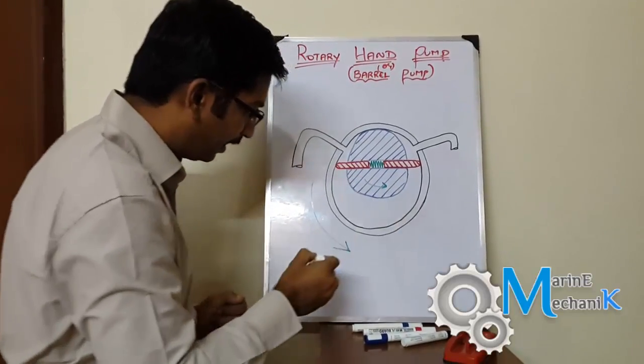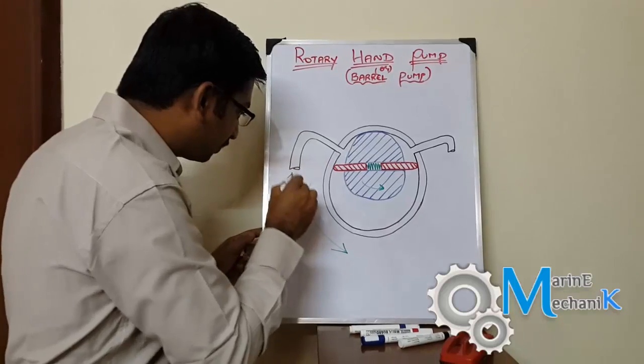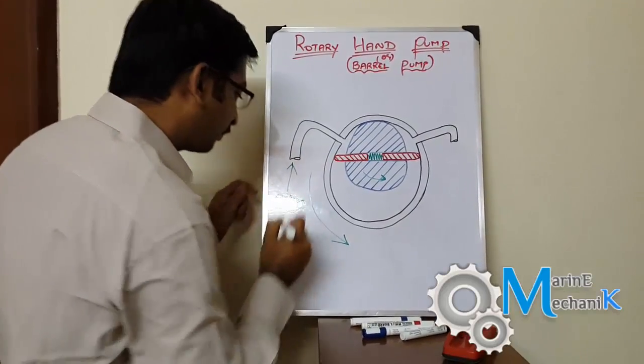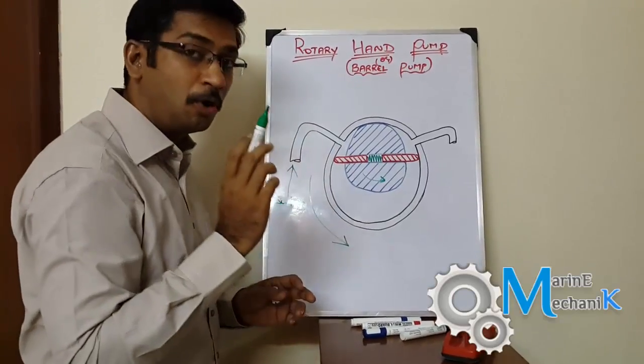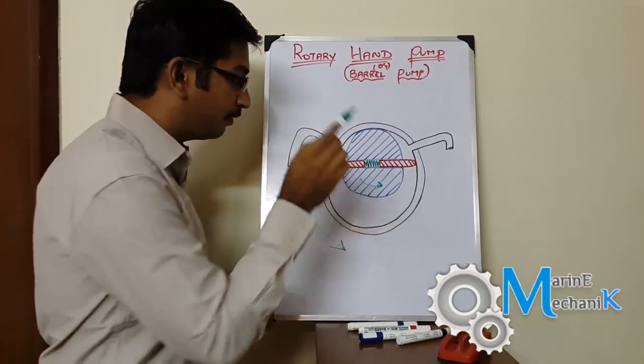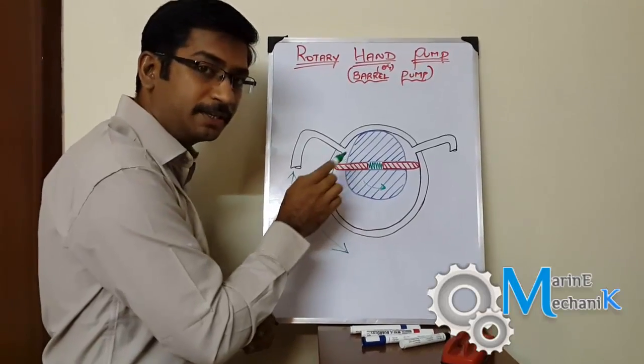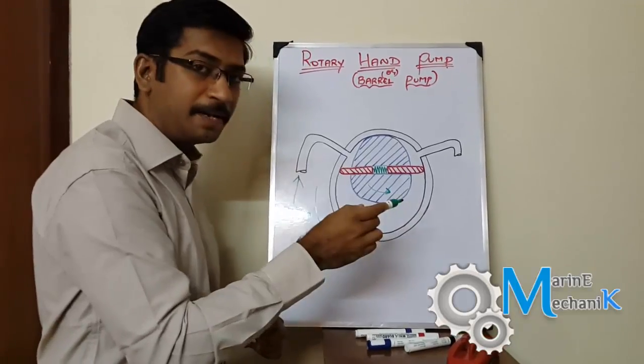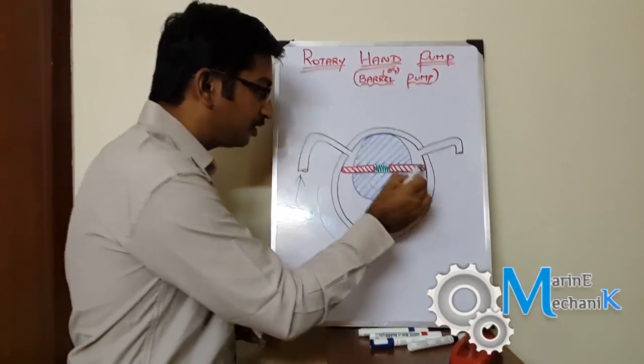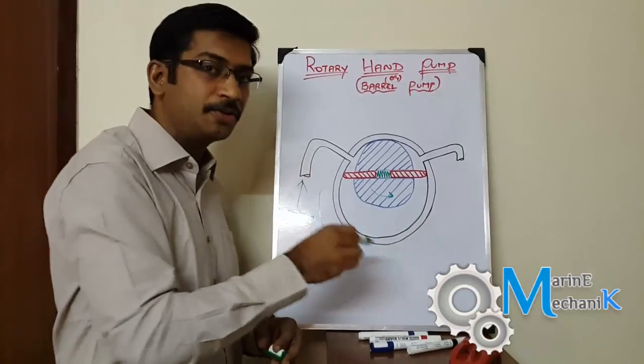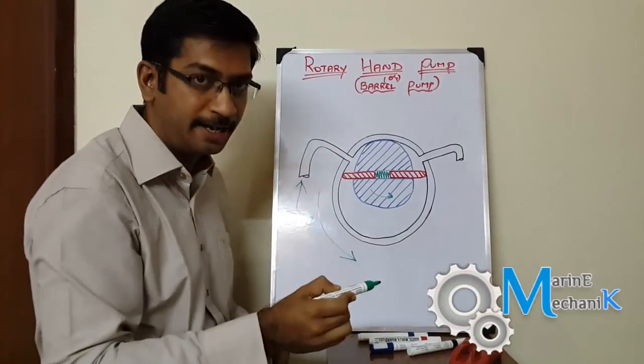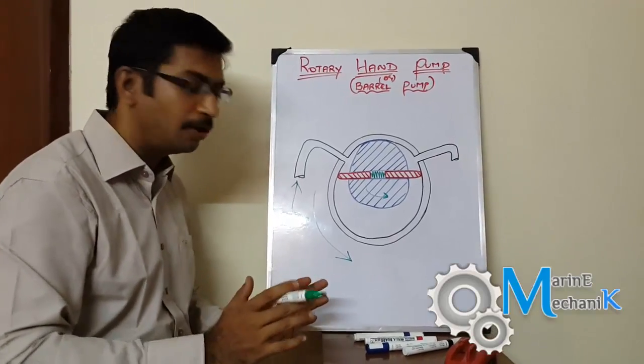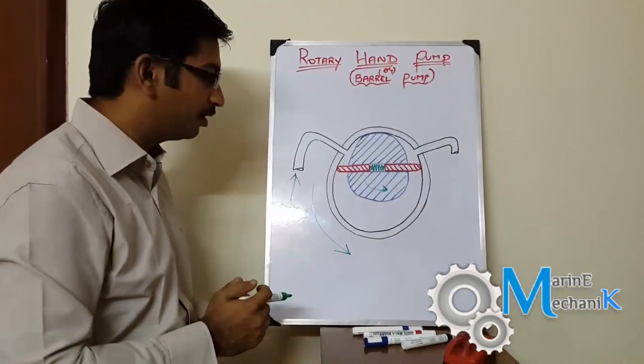When you rotate it anti-clockwise, this is going to rotate in anti-clockwise direction, and assuming this to be the suction. You have to remember that we are not going to use this pump for air or any gas on board ship, because for that application you need special seals. But on board ship, what we use is a simple pump just to pump oil or sludge or even sometimes fresh water.